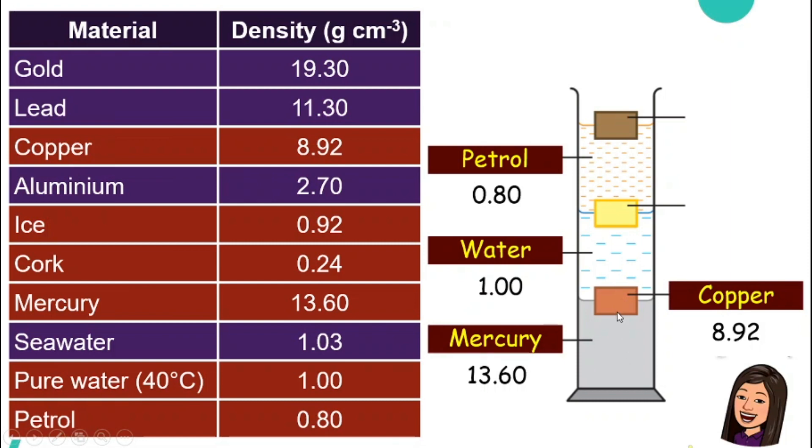So let's take a look. The highest density will be the copper. It is 8.92. So 8.92 is smaller compared to mercury. Hence it will float in mercury. But it is bigger compared to one, the density of water. So it will sink in water. The next one will be ice. So ice, we have 0.92.